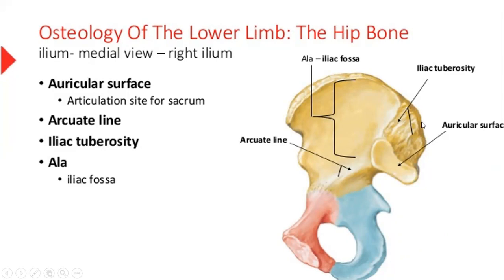In addition, we have the iliac tuberosity, the roughened area. There is a huge depression here which is called the iliac fossa. And this is the arcuate line.